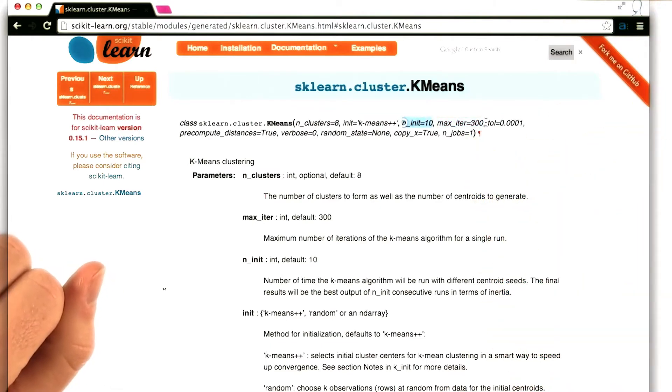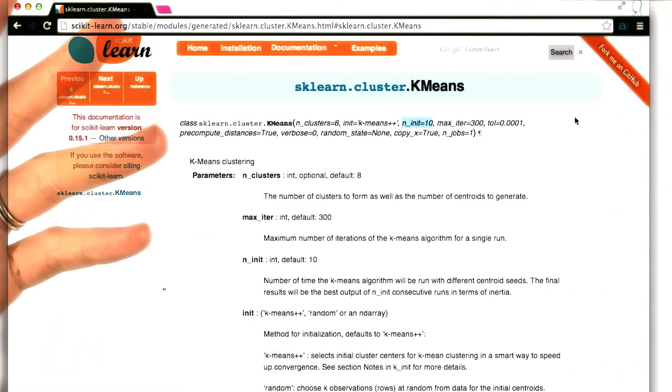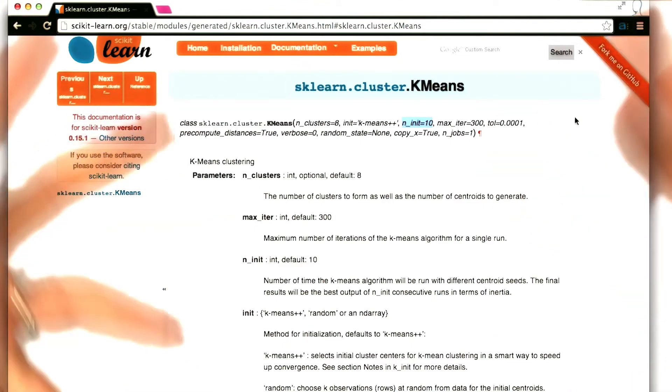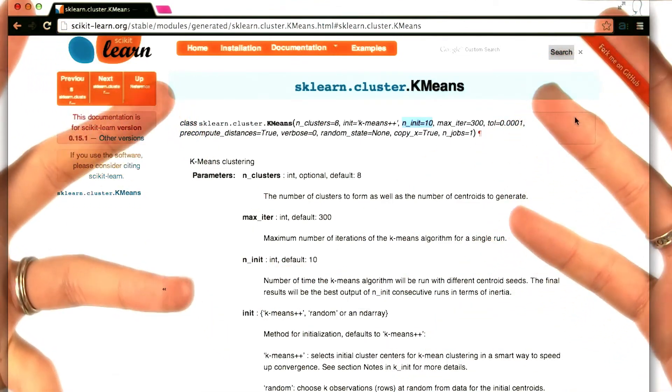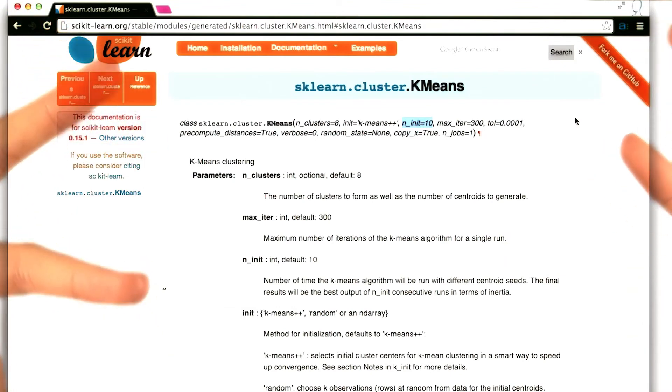And then the last parameter that I'll mention, another one that's very important, is the number of different initializations that you give it. Remember we said that K-means clustering has this challenge that depending on exactly what the initial conditions are, you can sometimes end up with different clusterings.